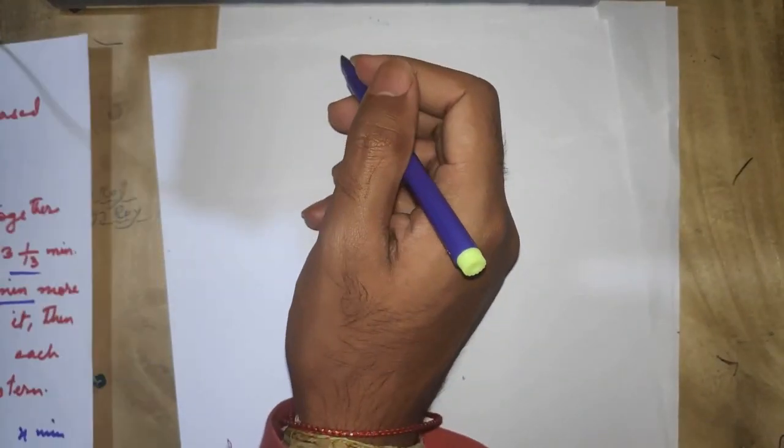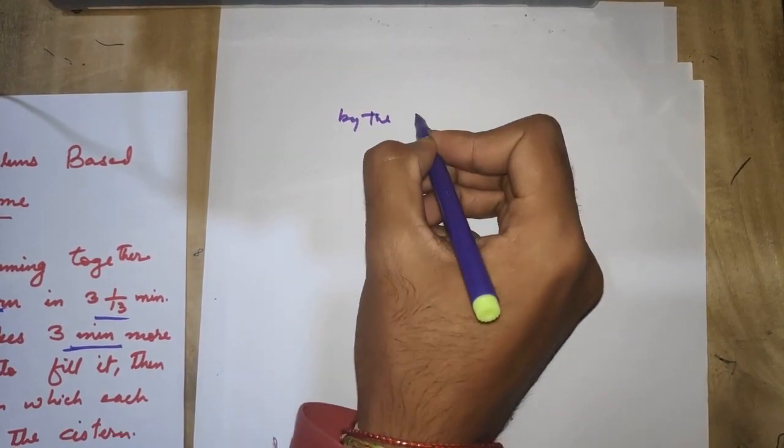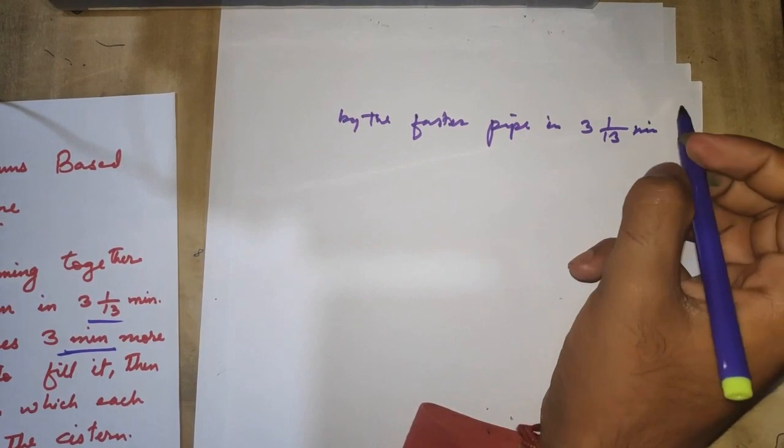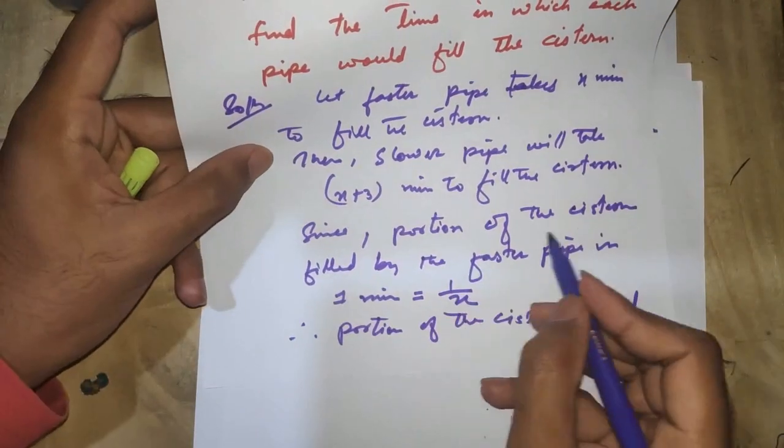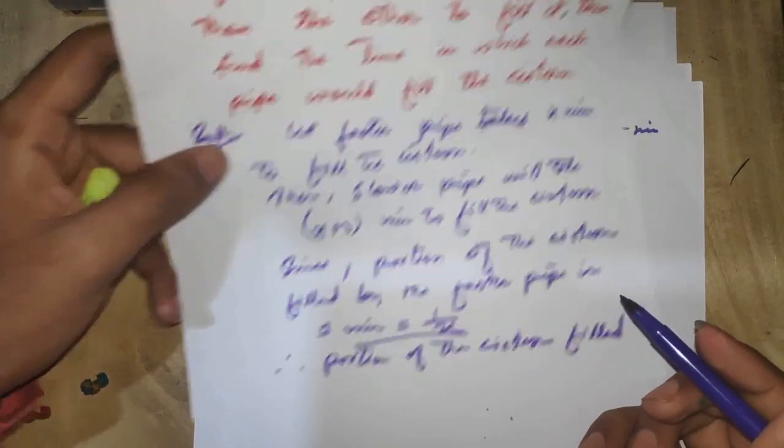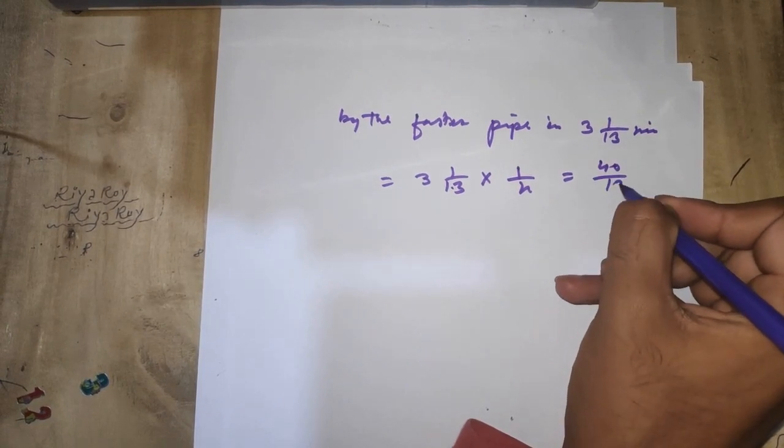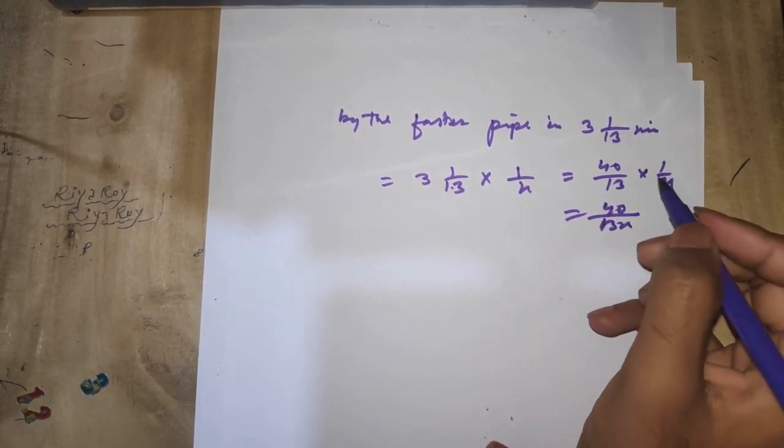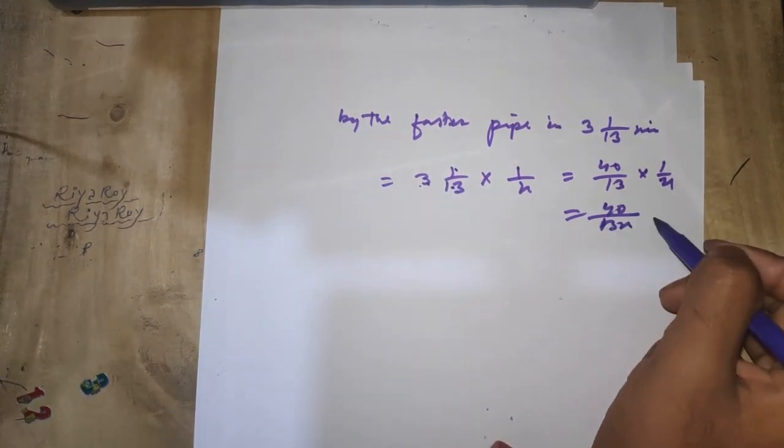Therefore, portion of the cistern filled by the faster pipe in 3 and 1/13 minutes equals 40/13 multiplied by 1/X, which gives us 40 over 13X.